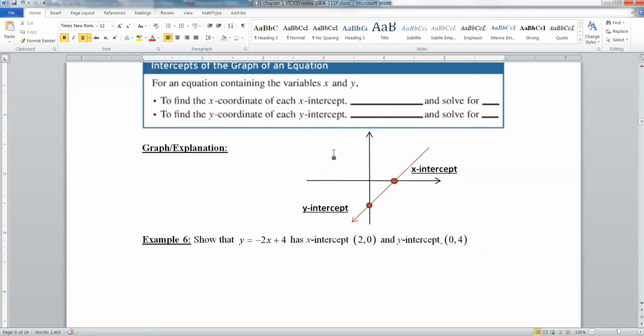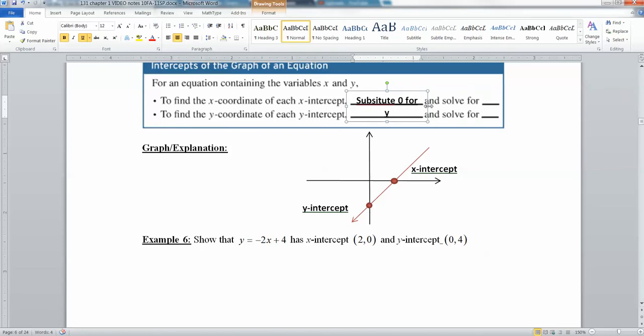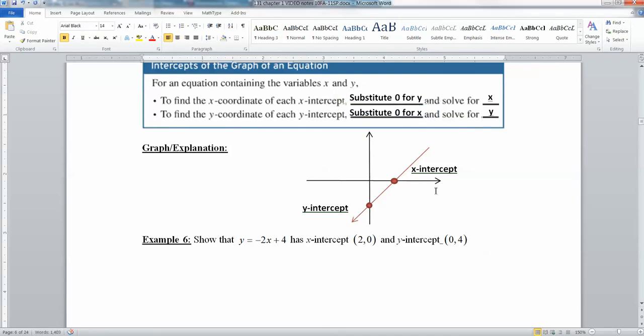You've moved to the right, but you haven't moved up or down at all. So what you have to do is you have to substitute zero in for... To find the x-coordinate of the x-intercept, you substitute zero for y, and then you solve for the variable that's left, which would be x. So you plug in zero for y, and you solve for x.